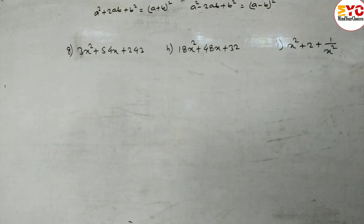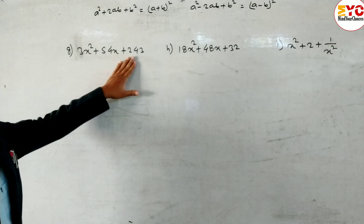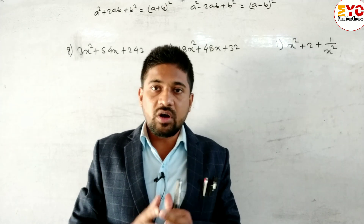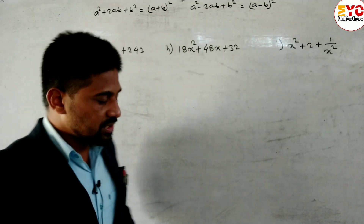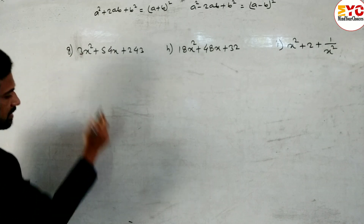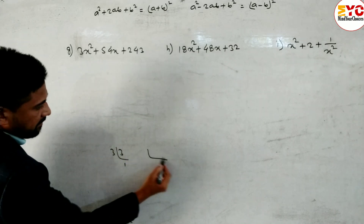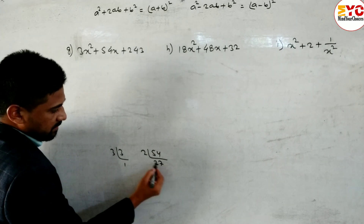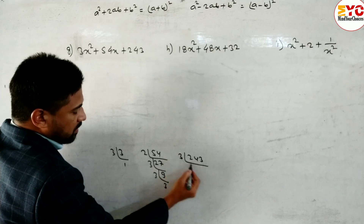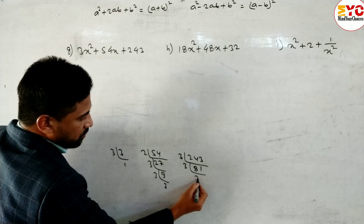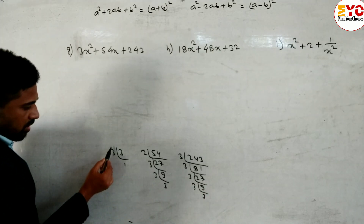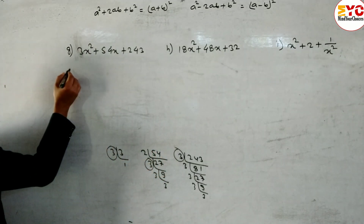Question 2g: 3x² + 54x + 243. First, find the common factor. We cannot convert directly to whole square form because 3 is not a perfect square. Finding factors: 3 divides 3, 54, and 243. For 54: factors give 3×18. For 243: dividing by 3 repeatedly gives 3×81. So the common factor is 3.